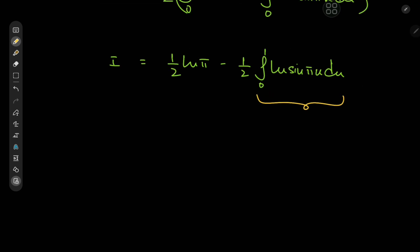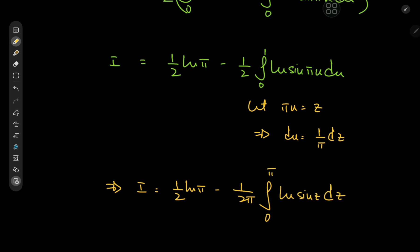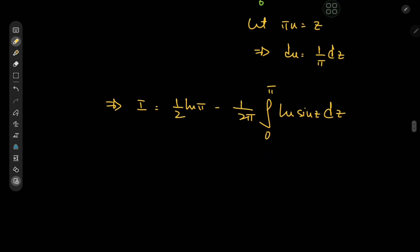We can transform this remaining integral with the substitution πu = z, which implies du = (1/π) dz. This gives I = ½ log π − (1/2π) ∫₀^π log sin(z) dz. This is very similar to Euler's log-trig integral, except the upper limit is π rather than π/2.